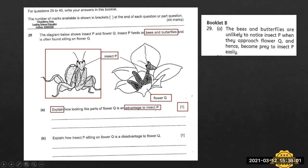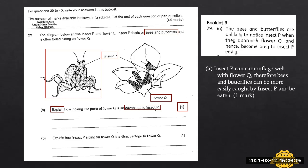So there's another alternative way of writing the answer. You can say that insect P, which is the praying mantis, can camouflage well with flower Q or blend well with flower Q. Therefore, bees and butterflies can be more easily caught by insect P and be eaten. So the examiner must be able to see that the student understand that how this insect can turn its structural adaptation, which is being able to camouflage well with flower Q, be an advantage because it is an advantage to insect P by catching the prey easily. So these are possible answers.